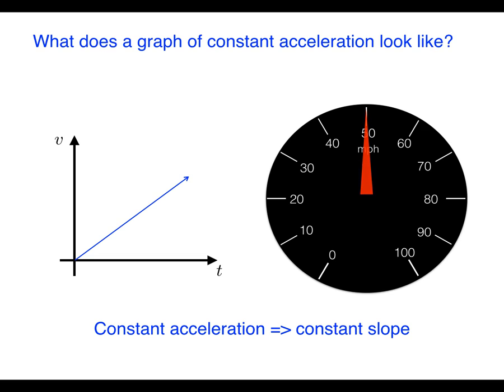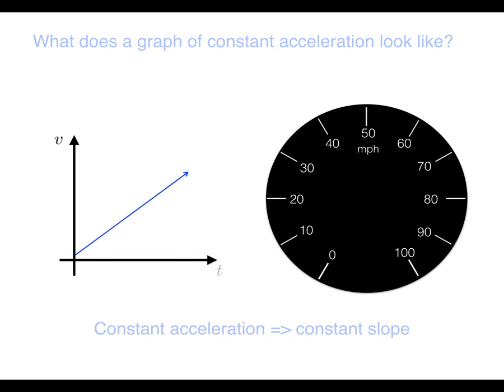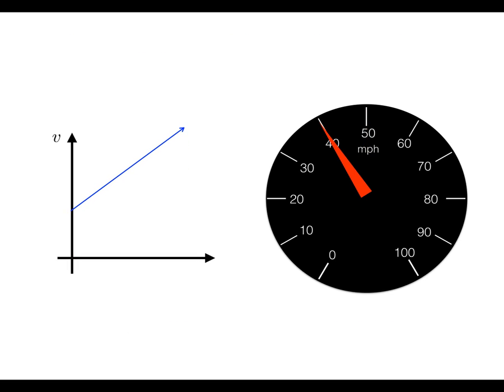Of course there's no need to begin the graph at the origin. It might instead look something like this and the speedometer corresponding to that motion would look something like this. It's also worth noting that the graph could be decreasing and when that happens the corresponding speedometer would do something like this.